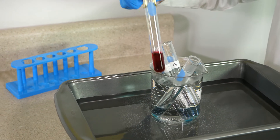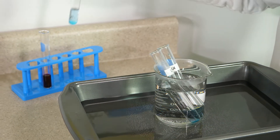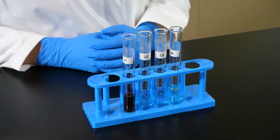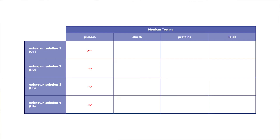It is time to remove the test tubes from the water bath and place them in the test tube rack. Let's examine the results. Remember, if glucose is present, the solution will turn red. We see that unknown solution 1 turned red, which indicates that glucose is present in the solution. Since none of the other solutions reacted, we know that glucose is not present in those solutions. Record your observations in your lab journal.